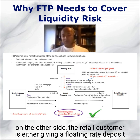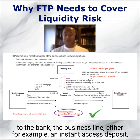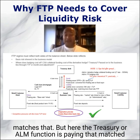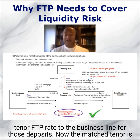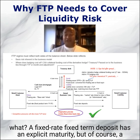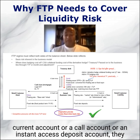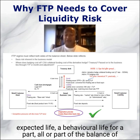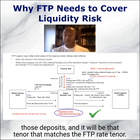Exactly the same on the other side. The retail customer is either giving a floating rate deposit to the bank — the business line — for example an instant access deposit or call account, or a term deposit at a fixed rate. The FTP ticket matches that, and the treasury or ALM function is paying that matched tenor FTP rate to the business line for those deposits. A fixed term deposit has an explicit maturity, but a current account, call account, or instant access deposit account doesn't have a fixed contractual term to maturity. So the bank will apply an expected life — a behavioral life — for all or part of the balance of those deposits, and it'll be that tenor that matches the FTP rate tenor.